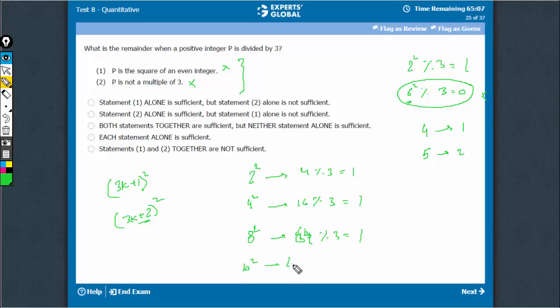10 squared, 100. The remainder would again be 1. So, the remainder, after satisfying these two conditions, the remainder is always going to be 1.